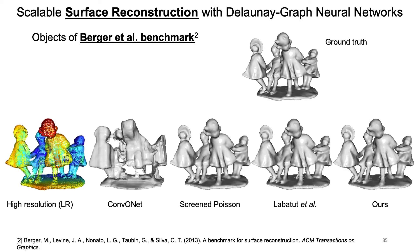First we show a reconstruction of a high-resolution scan, an easy problem for which most methods produce a high quality surface. We compare our method to convolutional occupancy networks, an implicit learning-based method also trained on ShapeNet objects, but since it globally embeds objects it learns a shape space specific to ShapeNet categories. This means it does not perform well on unseen shapes from unrelated categories, whereas our method working completely locally does not have such a problem. We also compare to the ScreenedPoisson algorithm and to the method of Labattu et al.